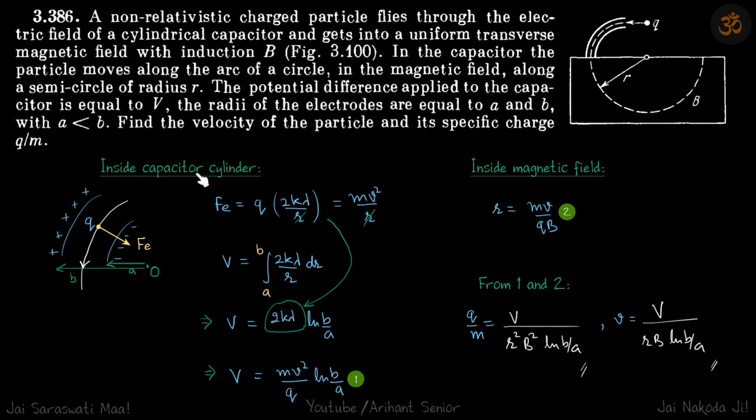Inside the capacitor cylinder, the inside radius is A and outside radius is B, and this charge Q is traveling in a circle of radius R. The force that's turning it, Fe, is equal to Q into electric field. Let's write the electric field as 2k lambda by R.